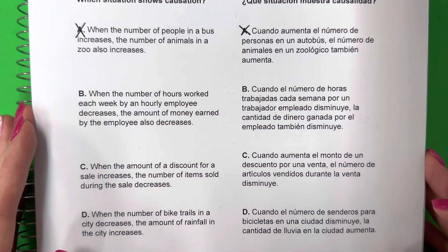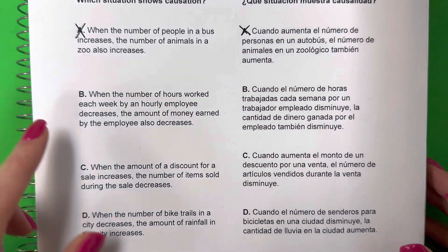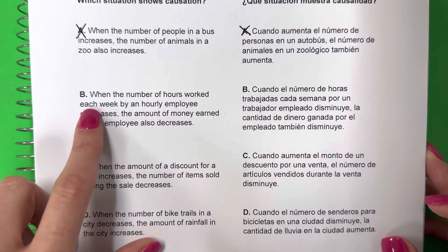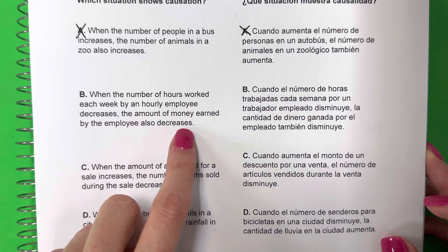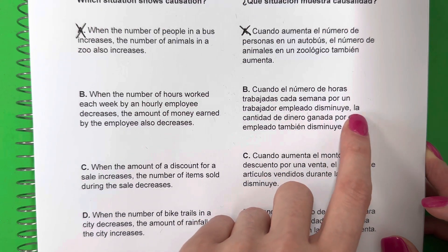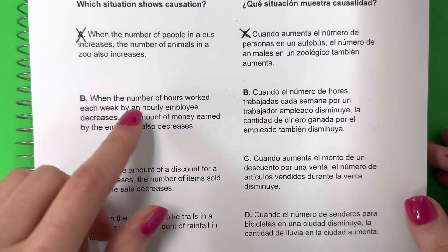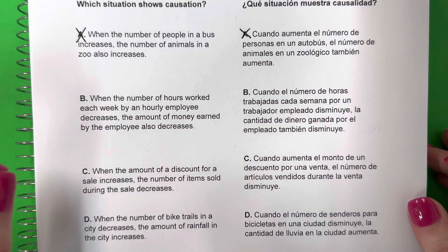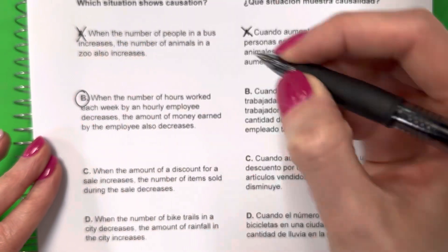Es un autobús normal. It could be in any city — en cualquier ciudad — and not all cities have a zoo. Y todas las ciudades no tienen un zoológico. Answer choice B: When the number of hours worked each week by an hourly employee decreases, the amount of money earned by the employee also decreases. Cuando el número de horas trabajadas cada semana por un trabajador empleado disminuye, la cantidad de dinero ganada por el empleado también disminuye. Basically, if someone works less hours, they will have less money — van a tener menor dinero. That's true. Es cierto. I think B is the answer here. La B es la respuesta.